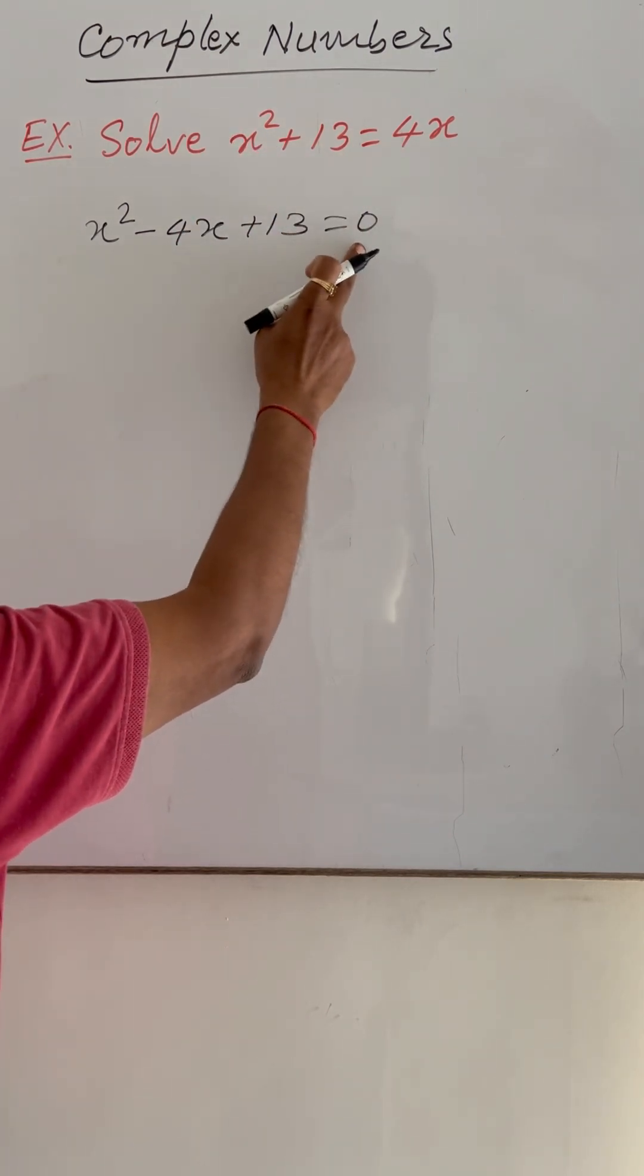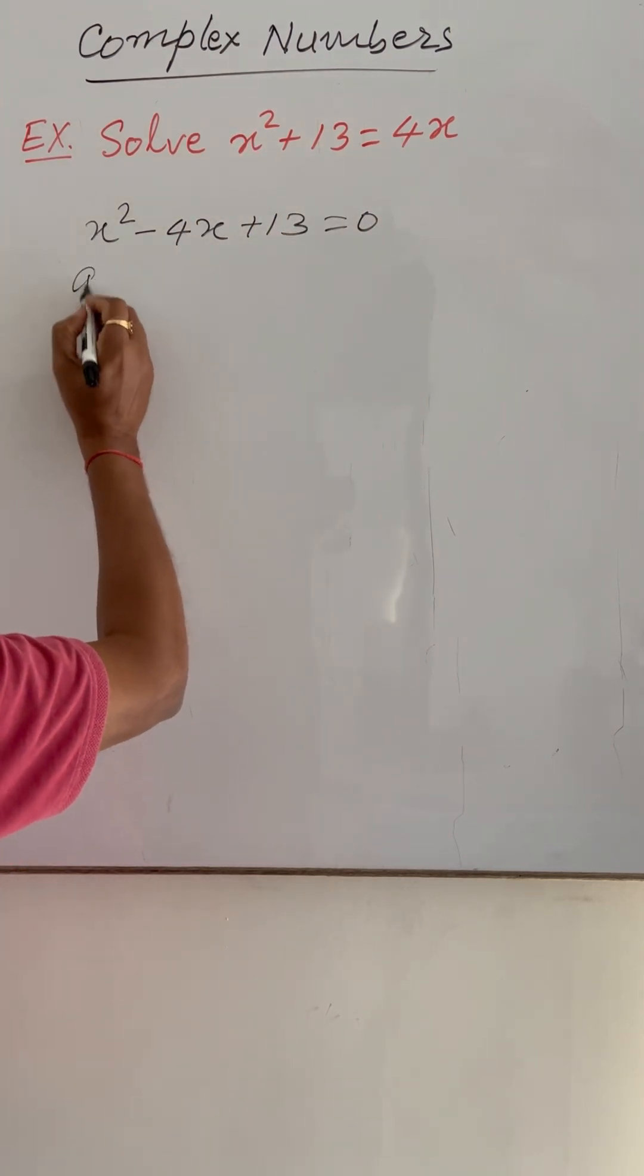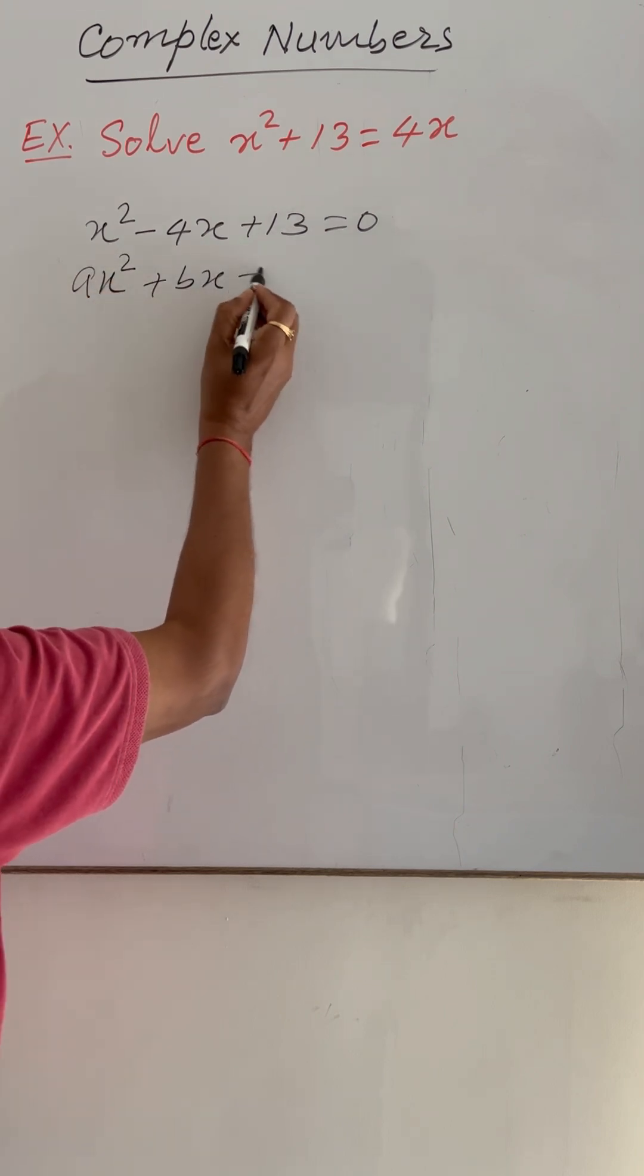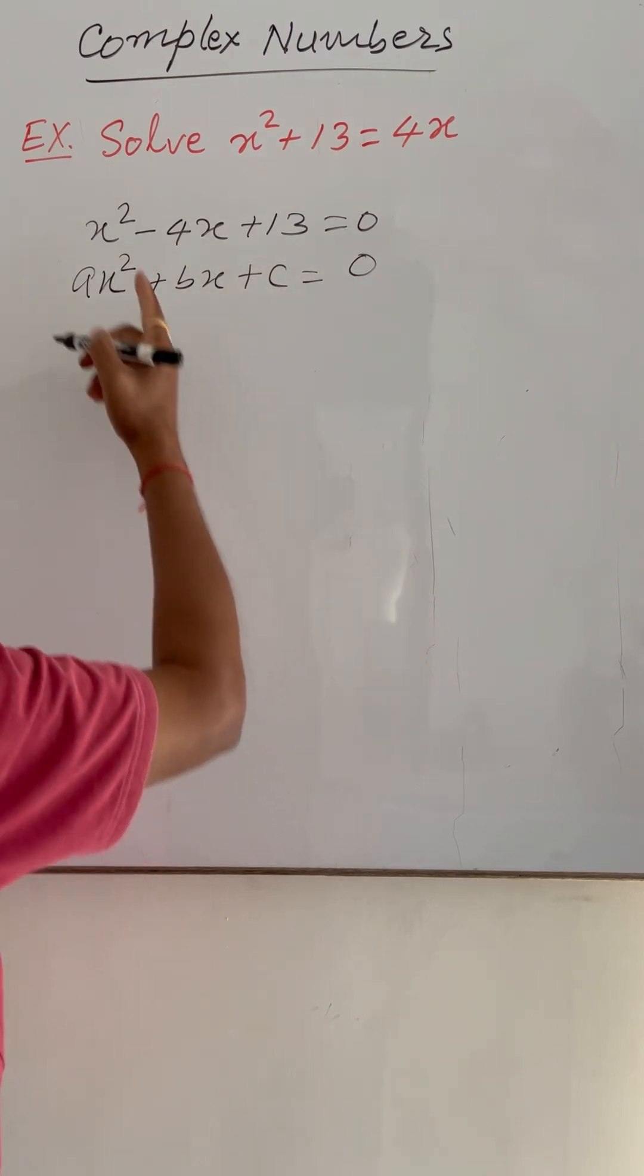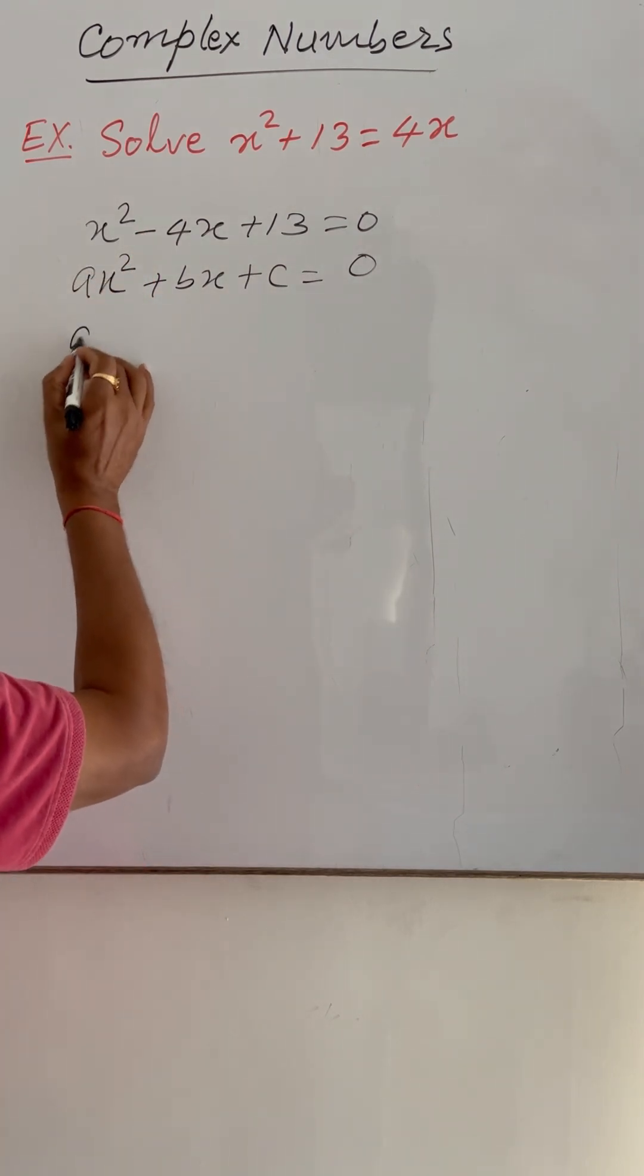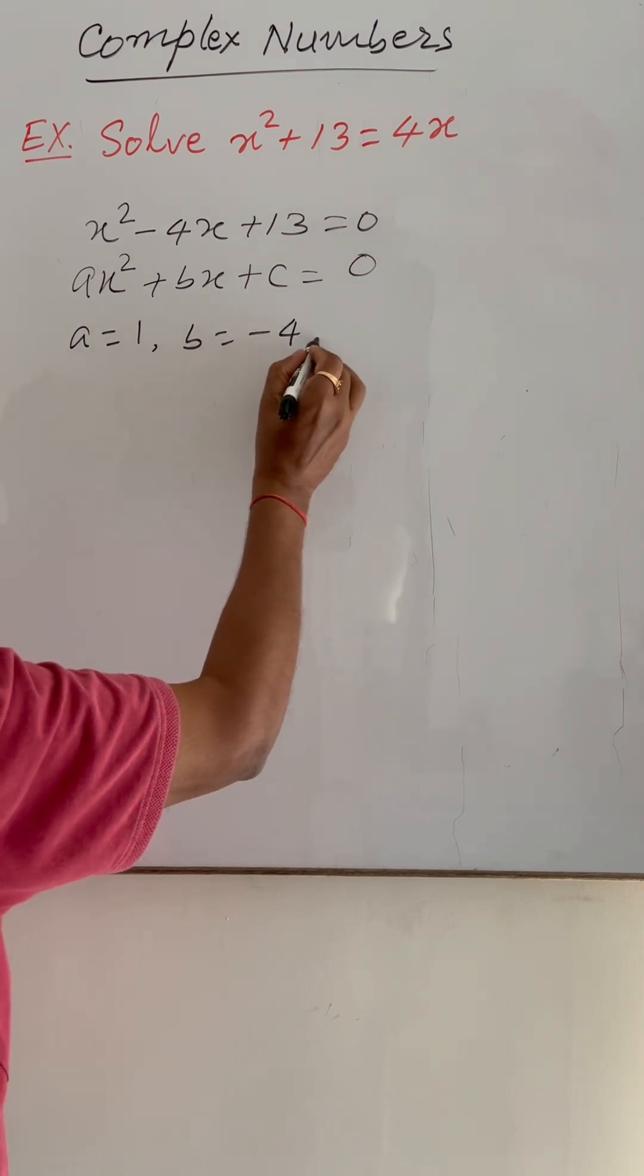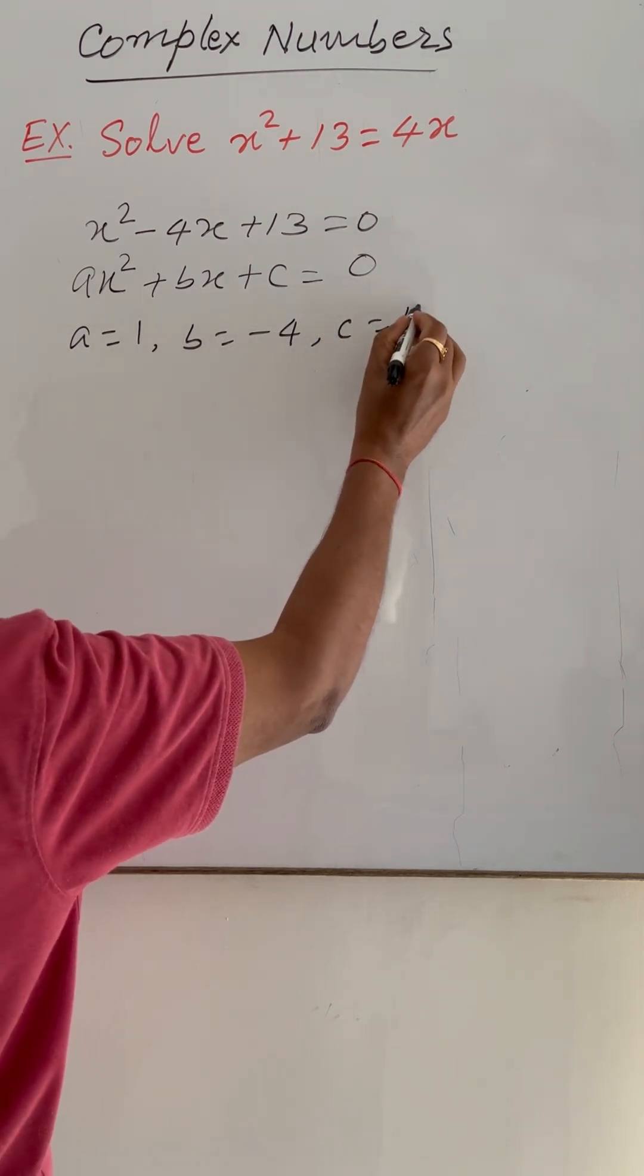Now we will compare this equation with the standard form of quadratic equation ax square plus bx plus c is equal to 0. By comparing these two equations, we are getting a is equal to 1, b is equal to minus 4, and c is equal to 13.